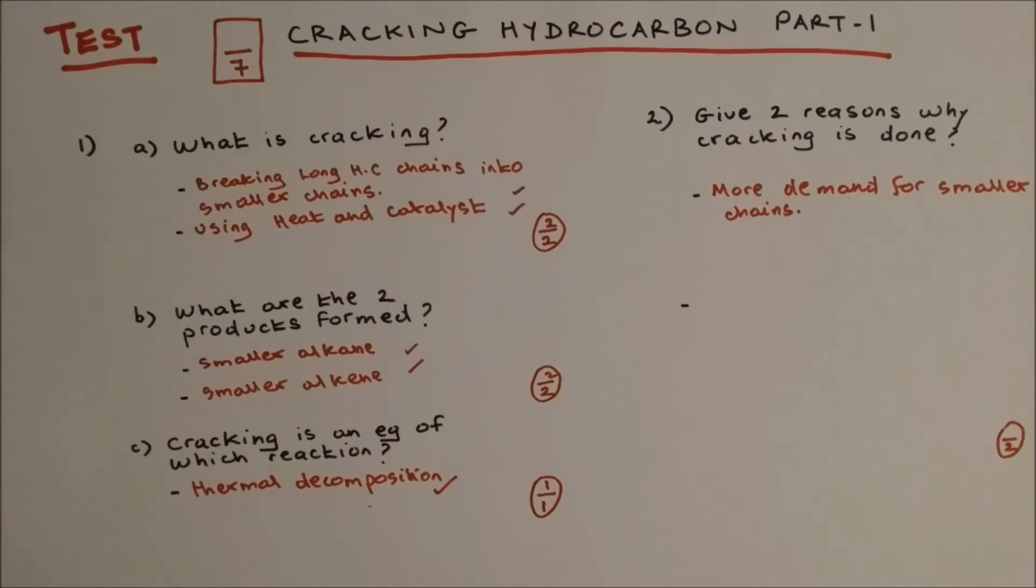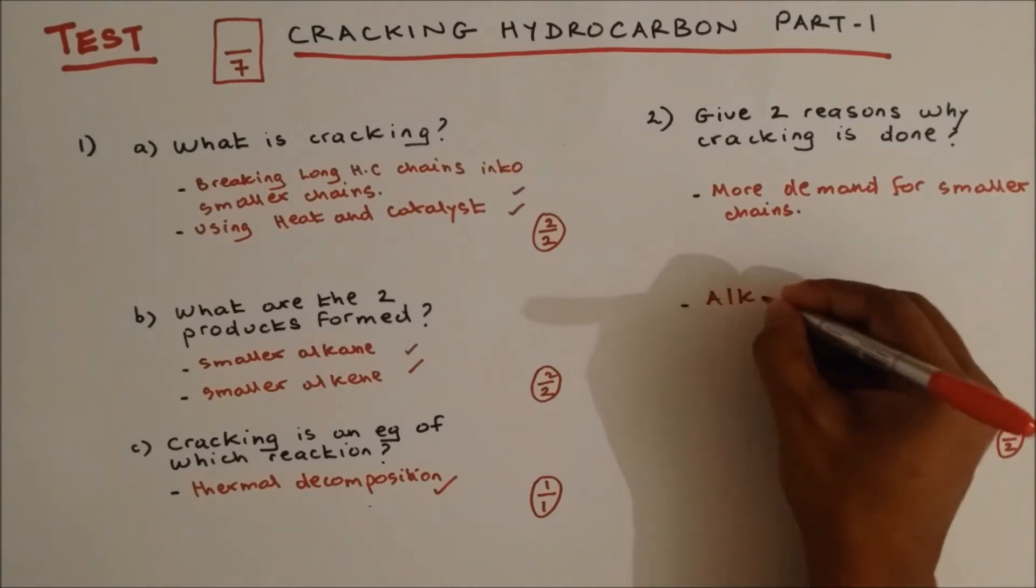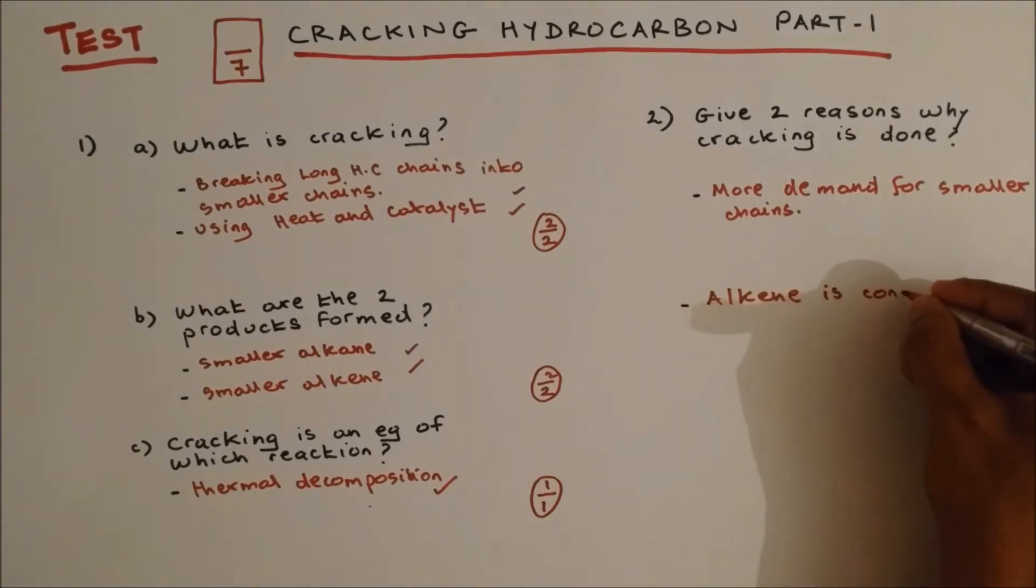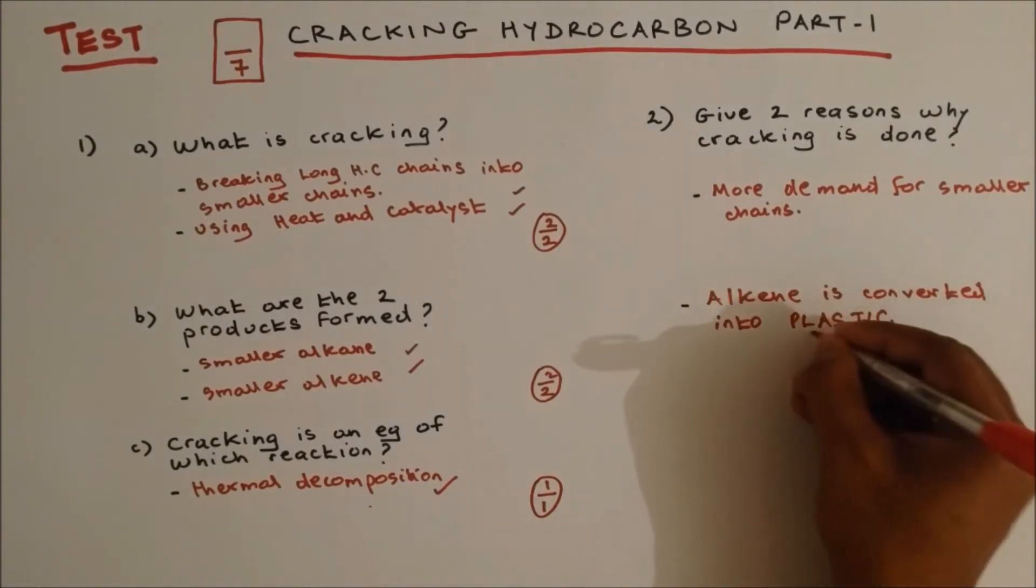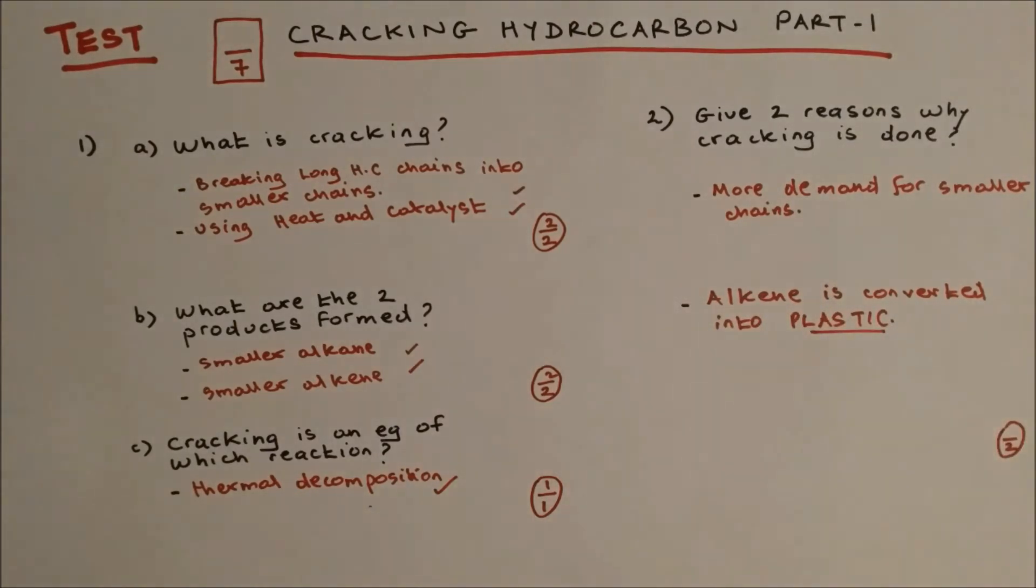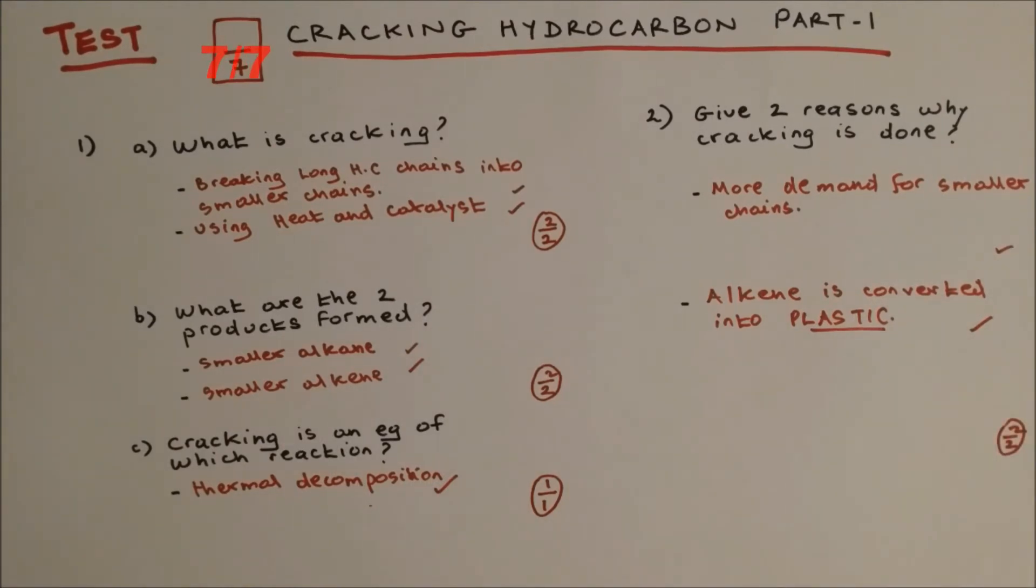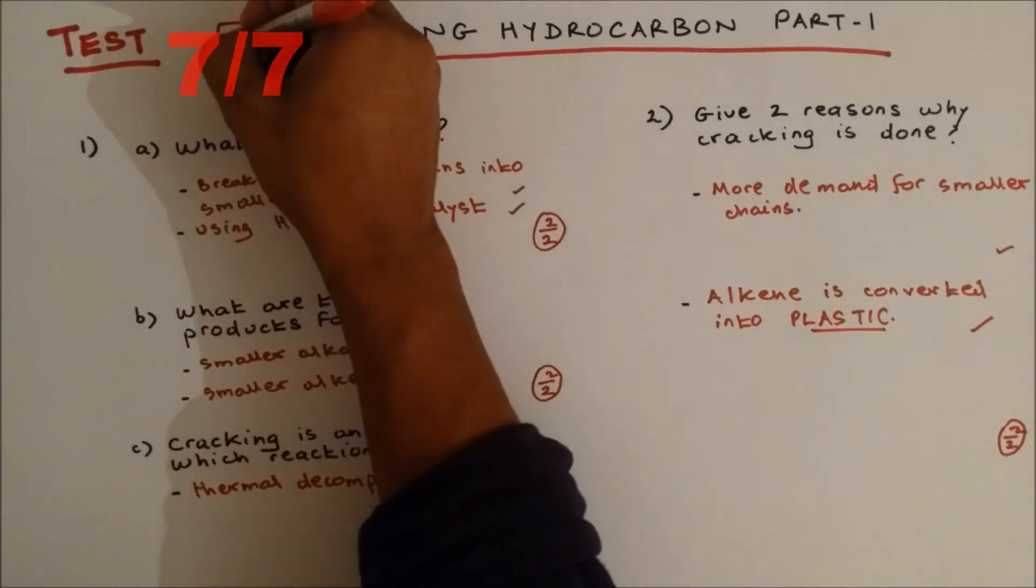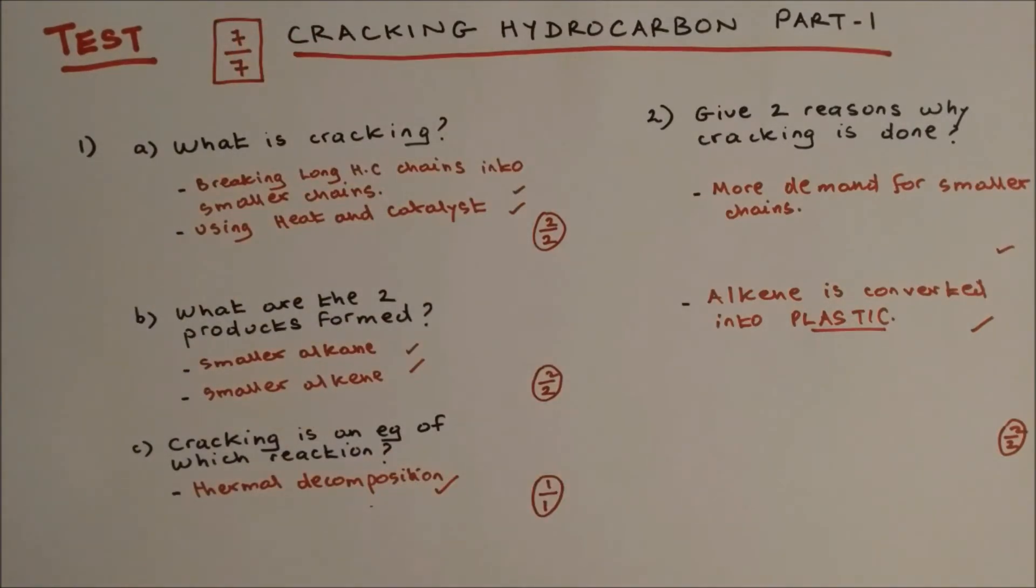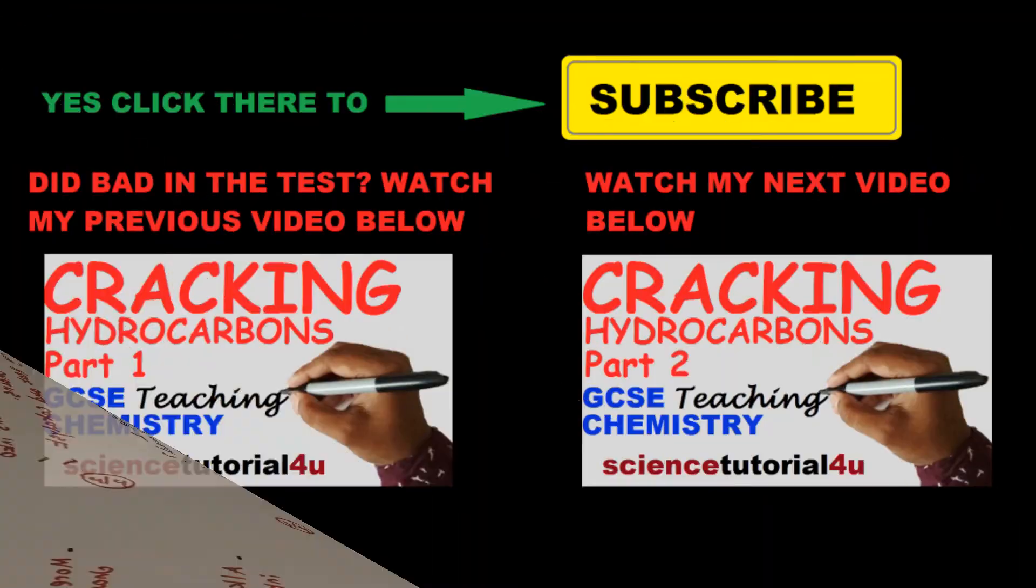The second reason why cracking is done is to make alkene, and the alkene made is converted into plastic by a process known as polymerization. Two marks, two out of two. Everything adds up to seven out of seven. Thank you for doing the test and I'll see you in my next video.